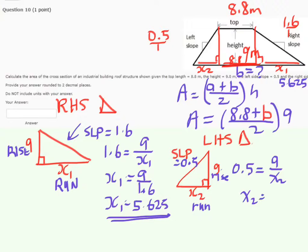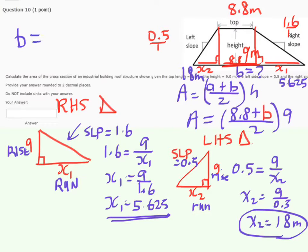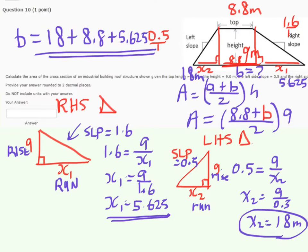Therefore, X2 is going to be equal to 9 divided by 0.5, and X2 equals 18 meters. And so now you have the X2 distance as 18 meters, and now you know that b is equal to the 18 meters, working our way across from left to right, starting with 18 meters, plus the 8.8 meters across that middle section there, which is that rectangular portion, plus the 5.625 meters that is on the right side of the trapezoid. And now we can plug in that b value into our formula for the area of the trapezoid and calculate the area, and we're done.